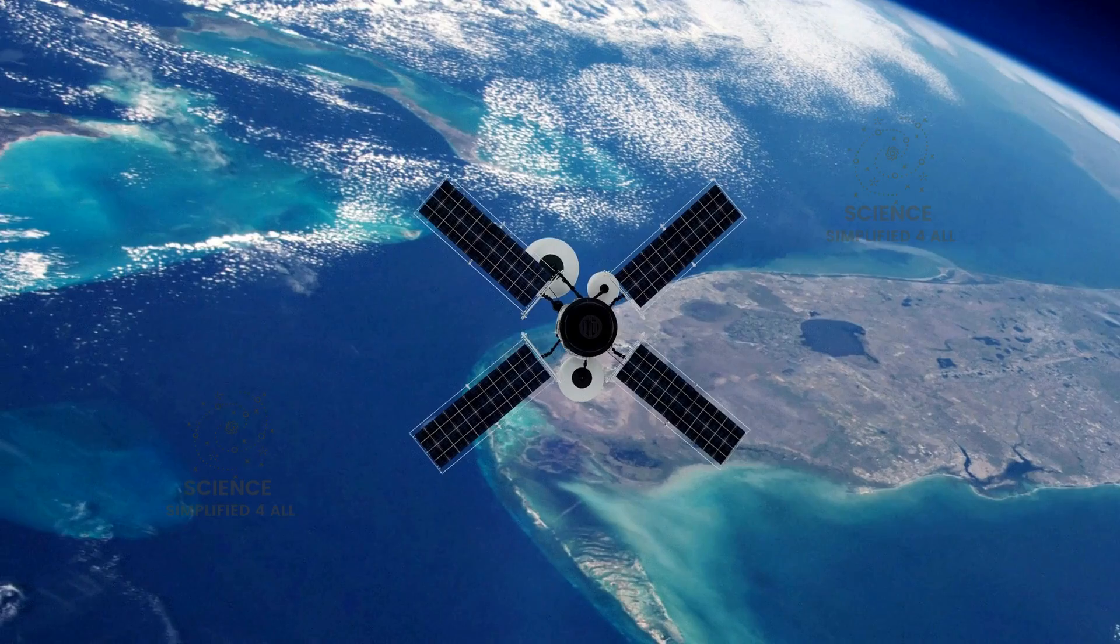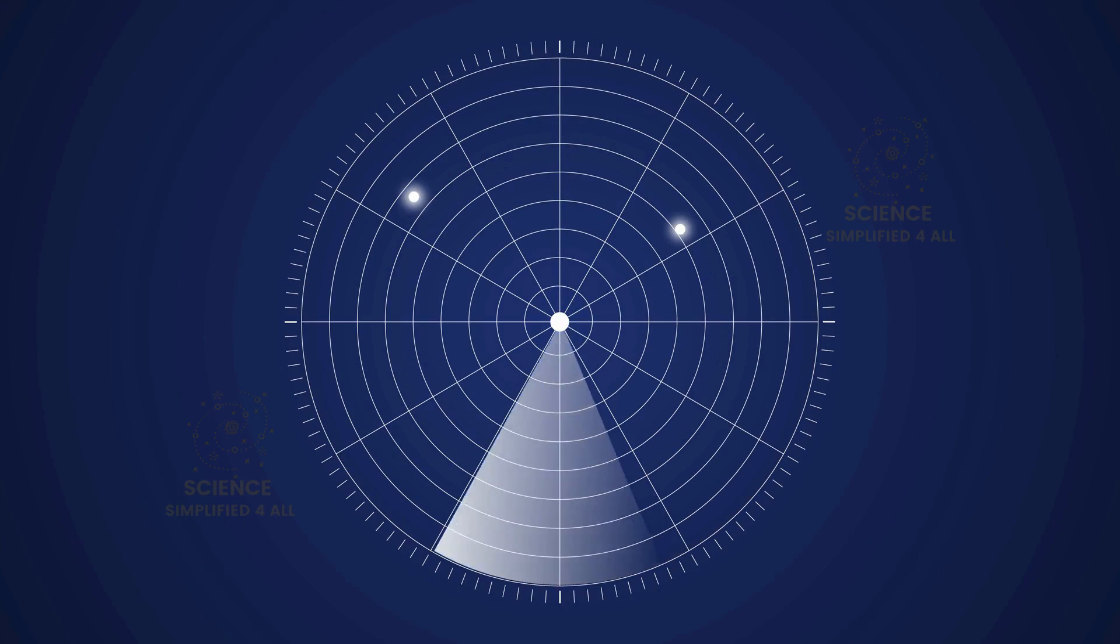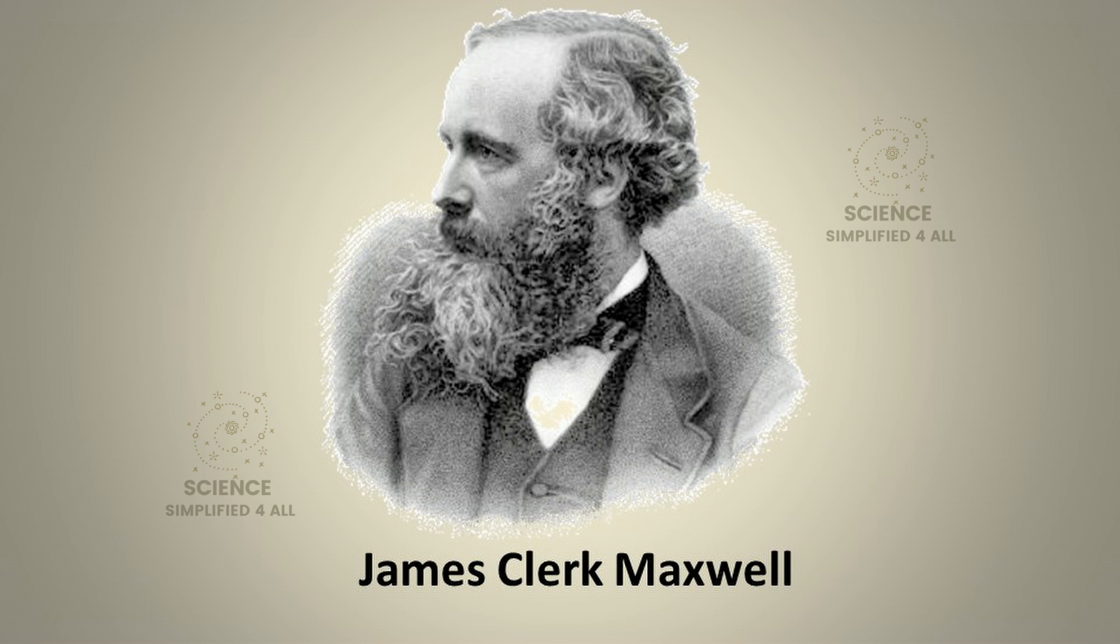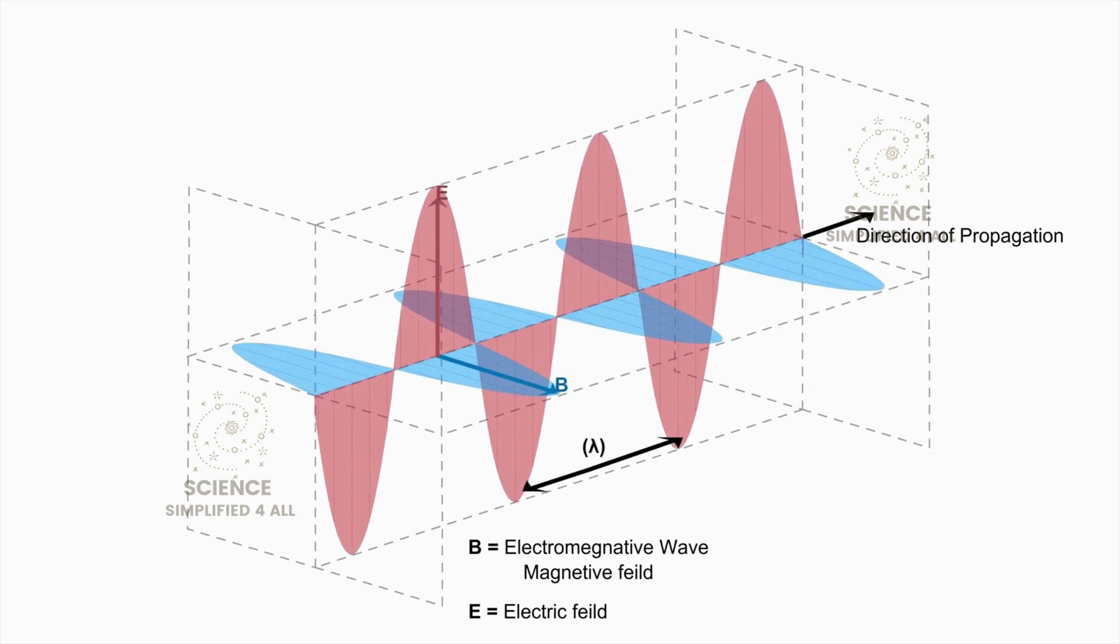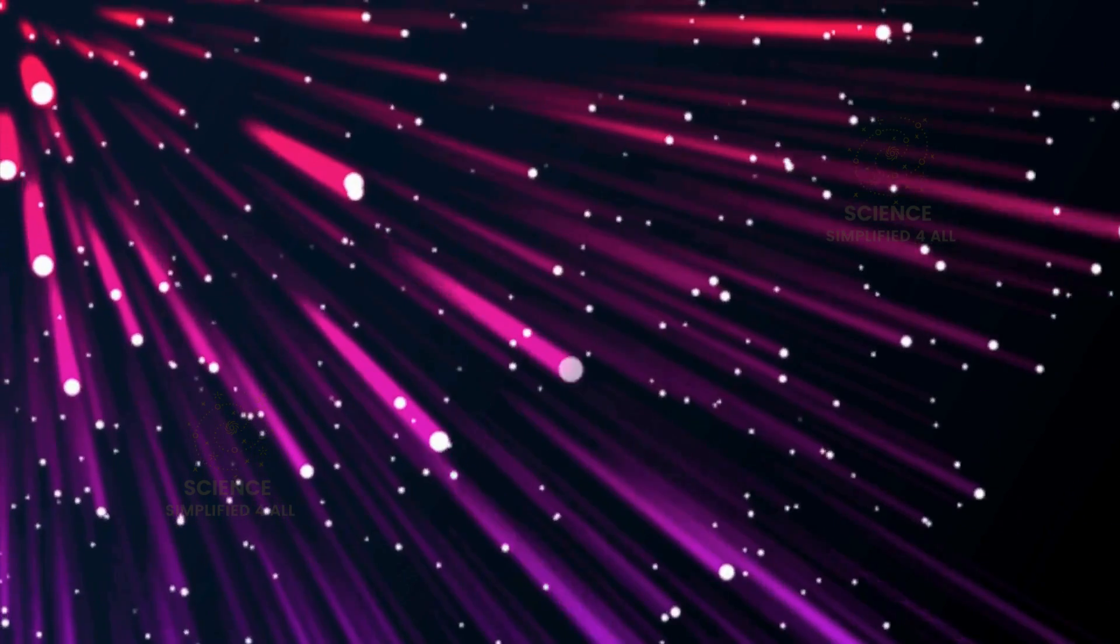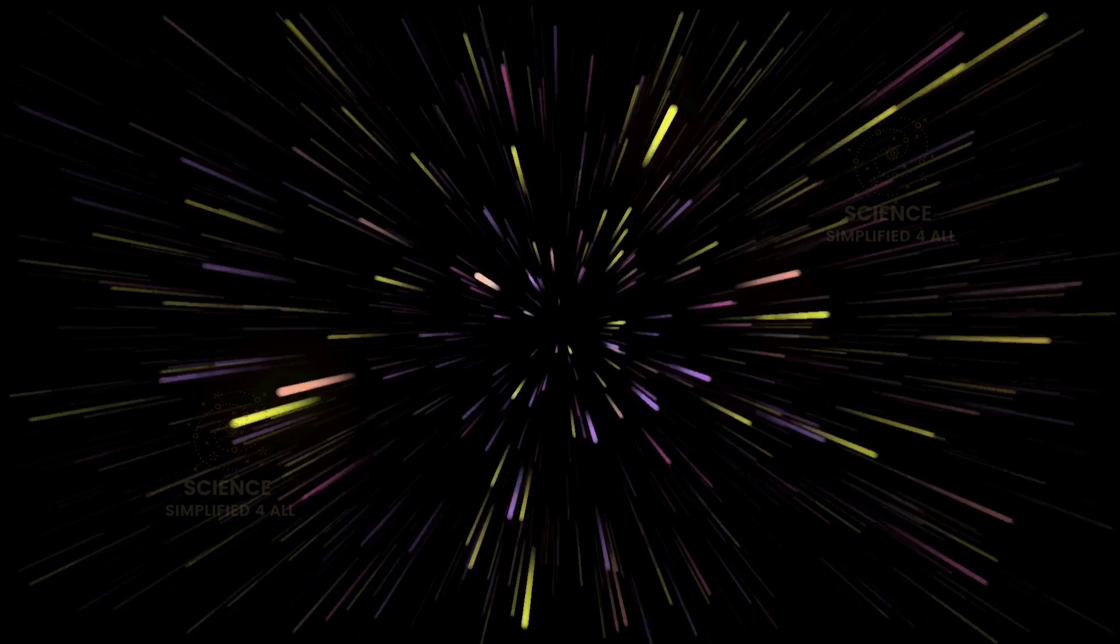Today, countless systems rely on this value for their operations. For example, radar systems and GPS devices use the speed of light in their calculations, and their exceptional accuracy serves as real-world proof of this value's correctness. Interestingly, even without these experiments, James Clerk Maxwell predicted the speed of light theoretically in 1865. As an expert in electric and magnetic fields, he calculated the speed of electromagnetic waves using fundamental constants from his electromagnetic theory. His calculation gave a value close to 300,000 kilometers per second. This value almost matched with the experimental value of speed of light available at the time. This groundbreaking work revealed that light itself is an electromagnetic wave. Both theoretical predictions and experimental measurements have consistently confirmed the speed of light, leaving no room for doubt.